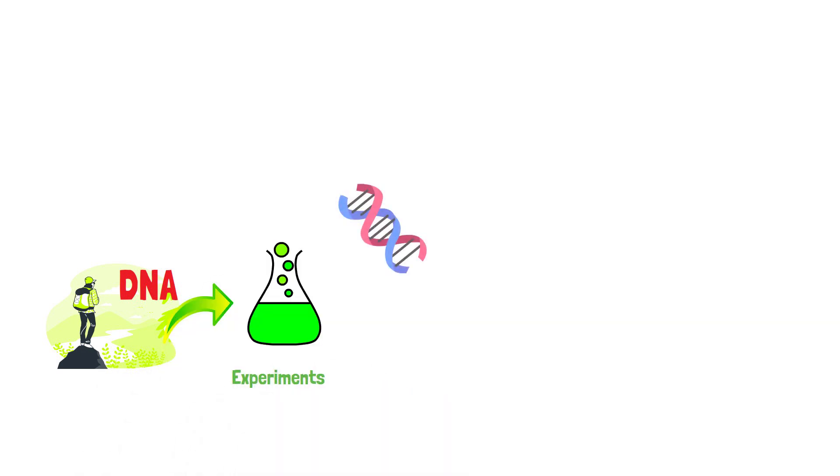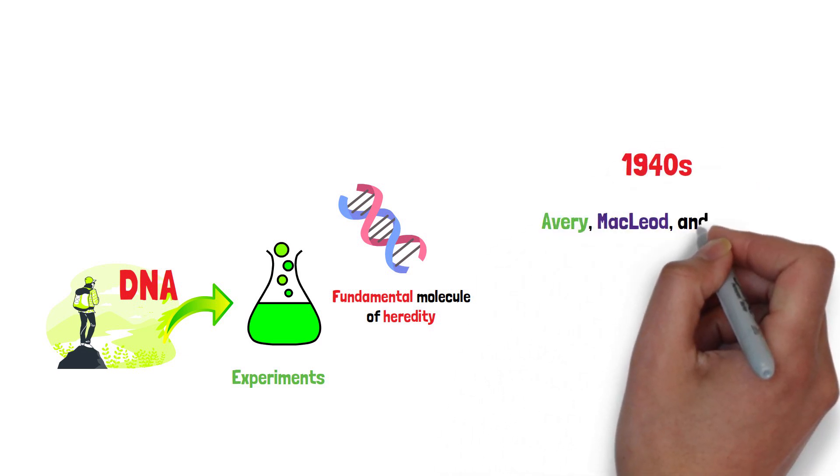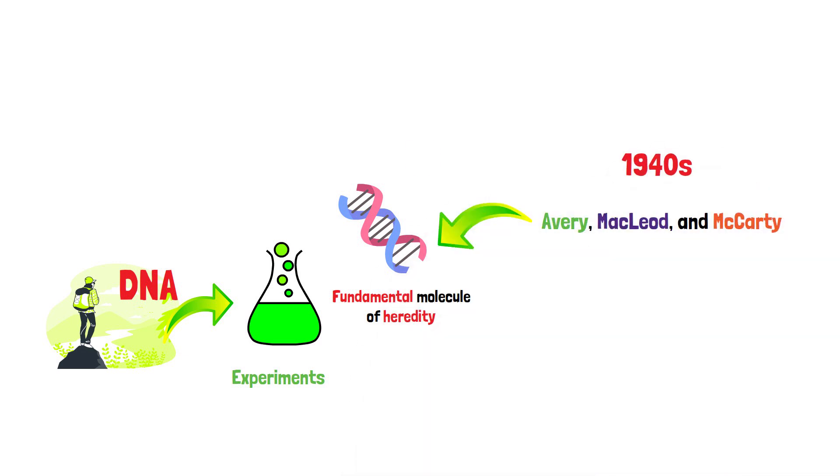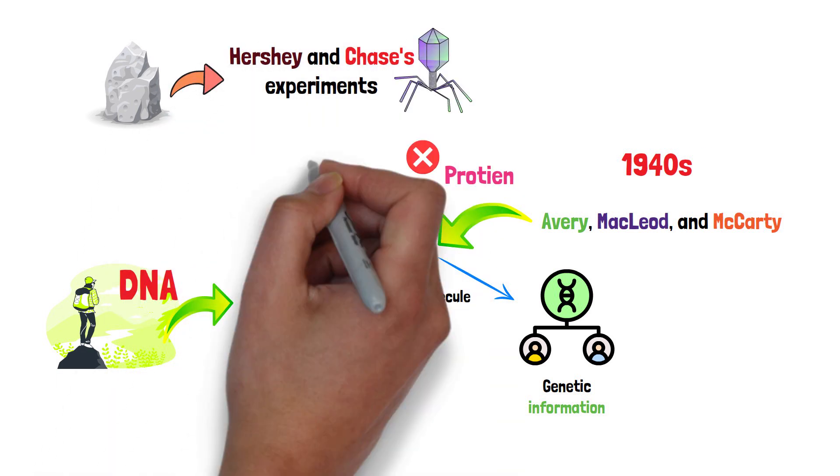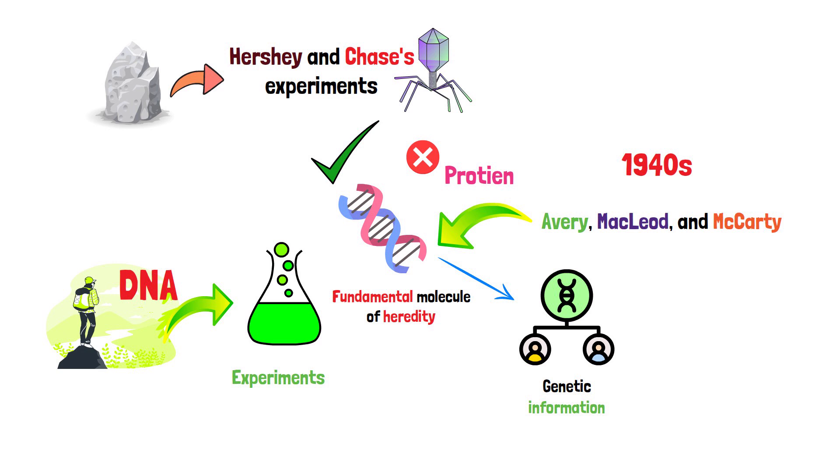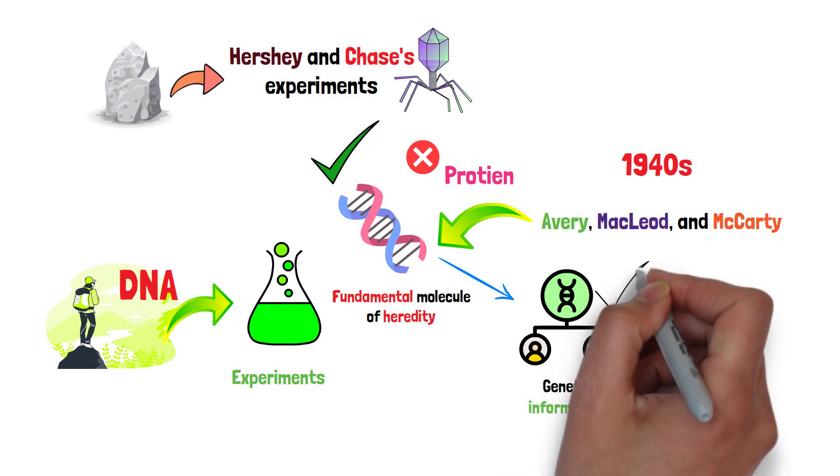The journey of DNA began with groundbreaking experiments that established it as the fundamental molecule of heredity. In the 1940s, Avery, McLeod, and McCarty demonstrated that DNA, not proteins, was the key to transmitting genetic information. This was further solidified by Hershey and Chase's experiments with bacteriophages, which unequivocally proved that DNA, and not protein, was the genetic material.